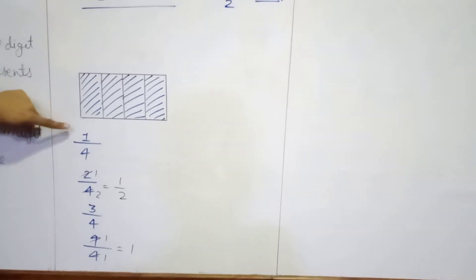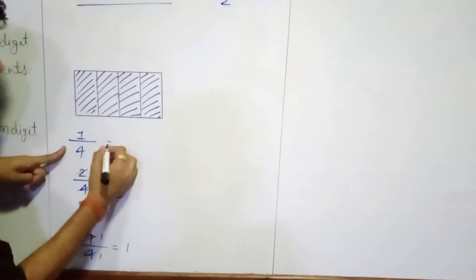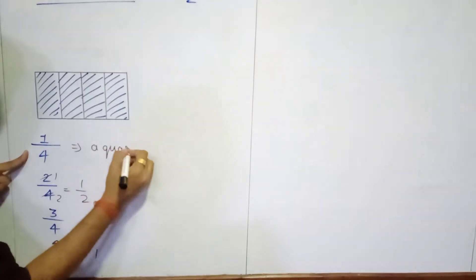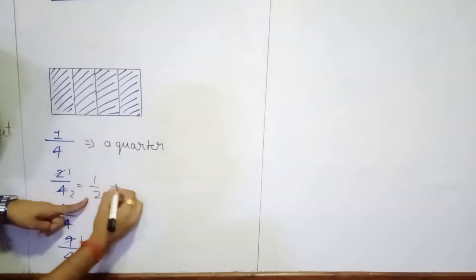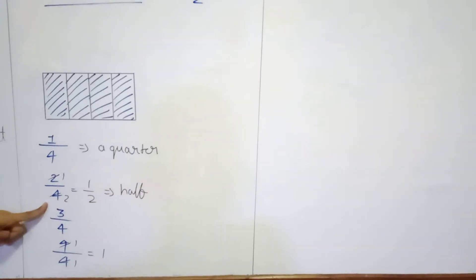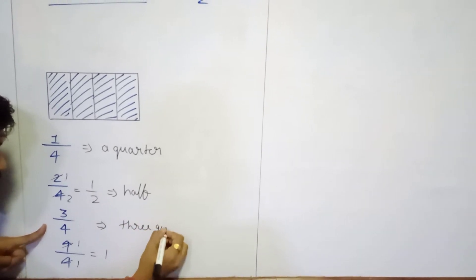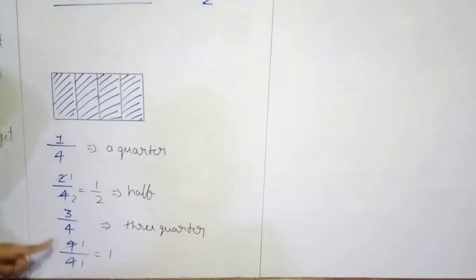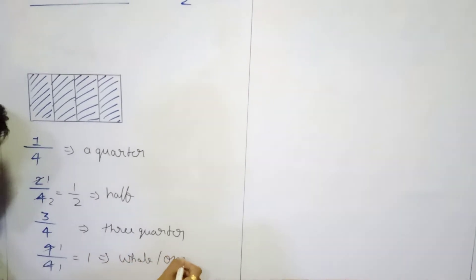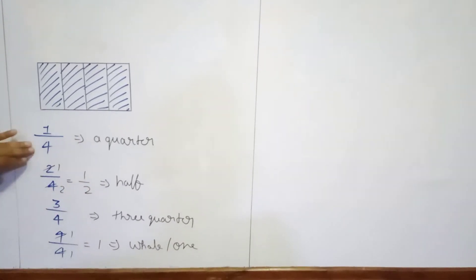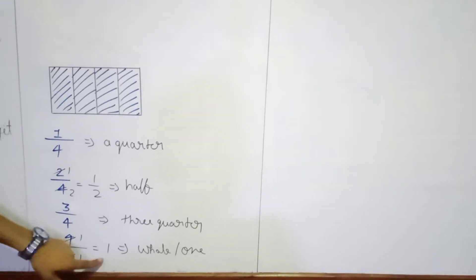So if we have 1 upon 4, that is called a quarter. If we have 1 upon 2, that is half. If we have 3 upon 4, that is three quarters. And if we have 4 upon 4, that is now we can say whole, or 1. This way we are going to read 1 upon 4, 1 upon 2, 3 upon 4, and 4 upon 4 means 1.